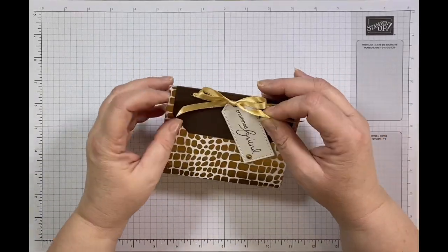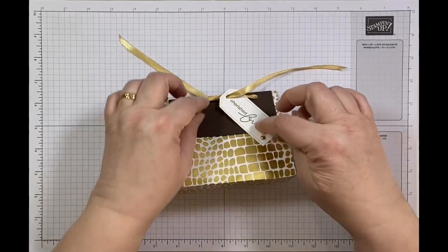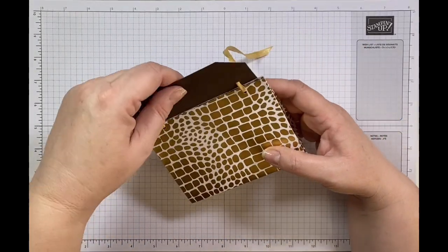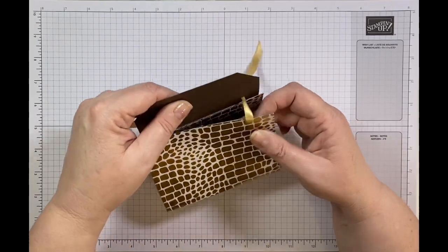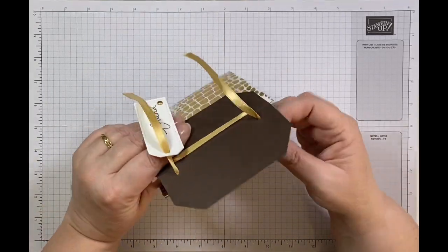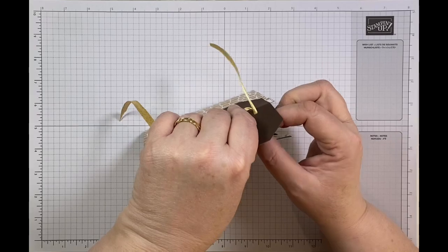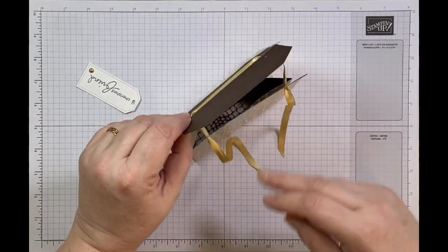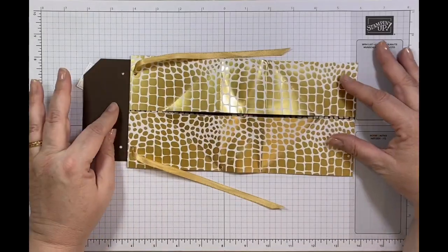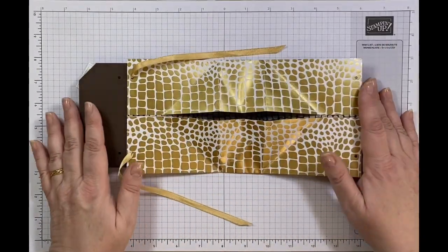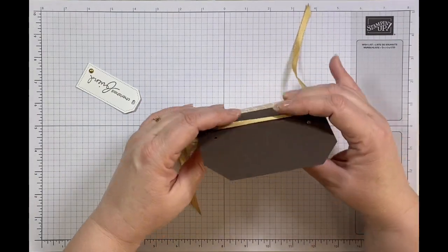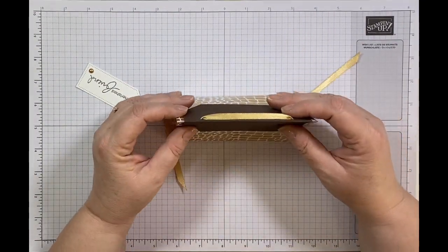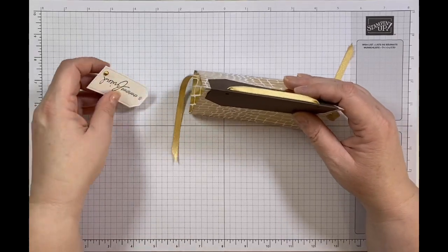So I will open it up to show you. I've made a little tag as well and it's got cherished friend on it which I thought was quite sweet. So if I open it up like this, you do need to pull through this ribbon and then it does actually fold flat.